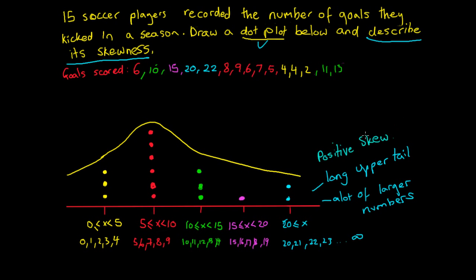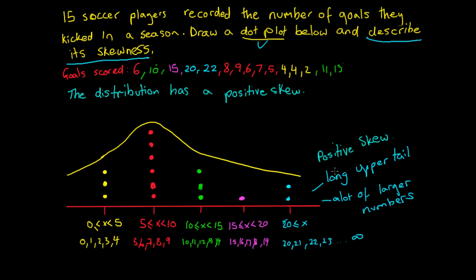There is a video on skewness on the site for you guys to have a look at. But when we have this long upper tail, we've got a positive skew. So if we were to describe this distribution, we would say: the distribution has a positive skew. We identify that by this long upper tail and our large number of larger values relative to the center of the data.